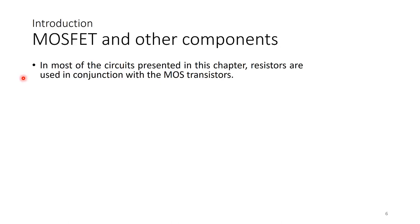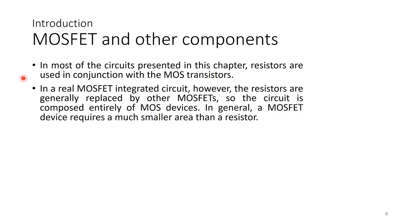In most circuits presented in this chapter, resistors are used in conjunction with MOSFETs. But in a real MOSFET integrated circuit, the resistors are generally replaced by other MOSFETs, so the circuit is composed entirely of MOSFET devices. A MOSFET device can be designed to function as a resistor as well as capacitors and inductors. A MOSFET device also requires a much smaller area than a resistor on an integrated circuit substrate, making it favorable to use MOSFETs in integrated circuits.